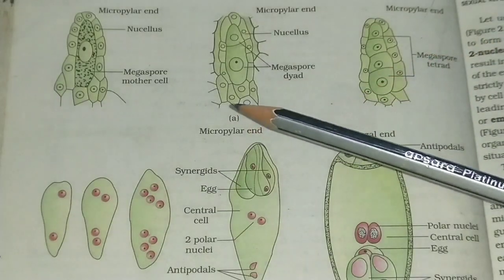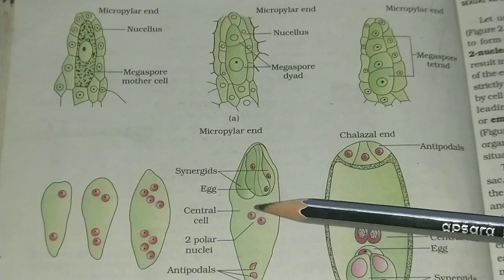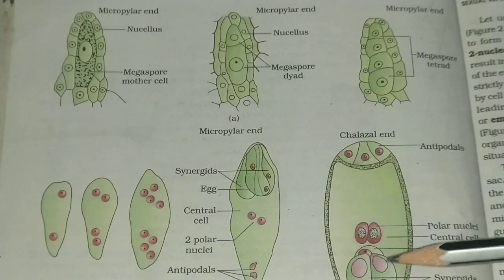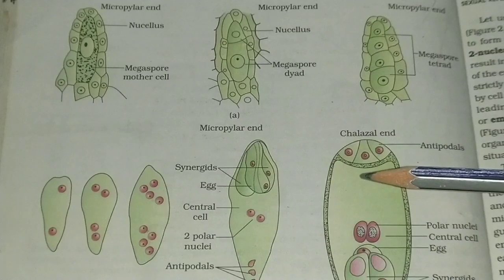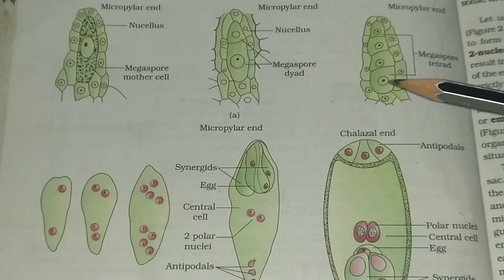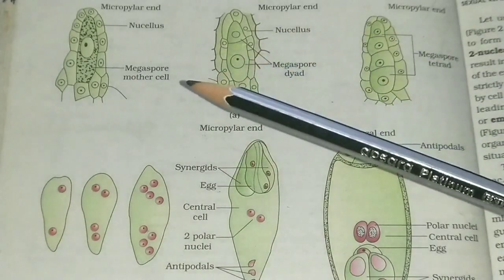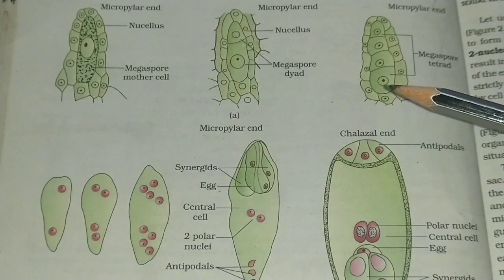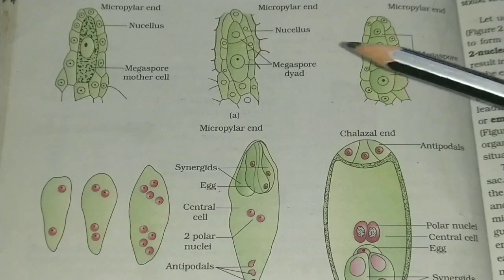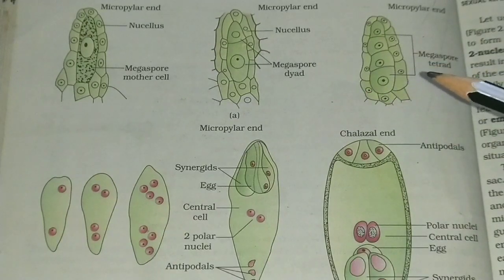See figure 2.8 — mega gametogenesis. First of all, how is an embryo sac formed? This is a mature embryo sac. This mature embryo sac is formed from a mega spore. Now the question arises: how is this mega spore formed? This mega spore is formed from the mega spore mother cell by the process of mega sporogenesis.